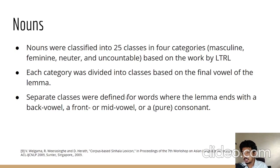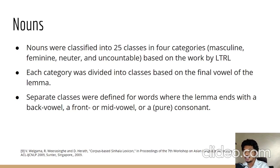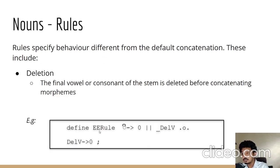We started building the noun morphological analyzer. Nouns were classified into 25 classes in four categories — masculine, feminine, neuter, and non-countables — based on work by LTRL. Each category was divided into classes based on the final vowel of the lemma, with separate classes for words ending in a back vowel, front vowel, mid vowel, or pure consonant. We then identified concatenation rules. Apart from default concatenation, we identified three major rules: deletion (the final vowel or consonant of the stem is deleted before concatenating morphemes).